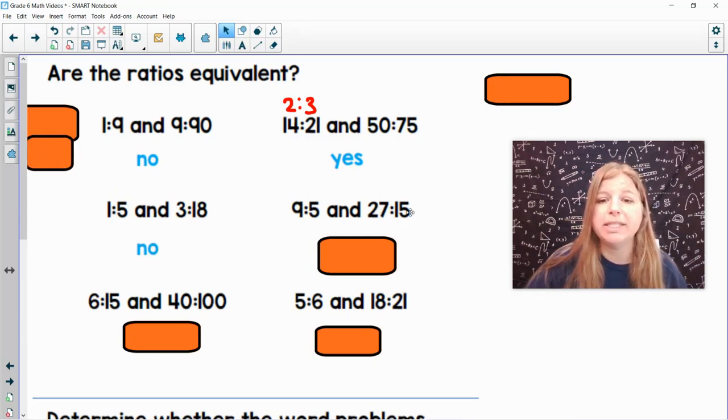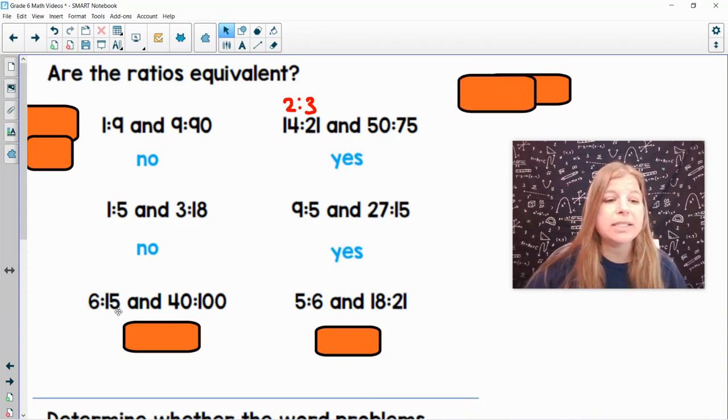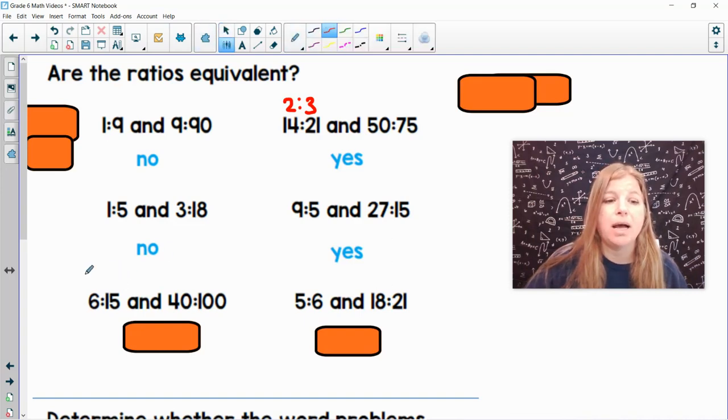9 to 5 and 27 to 15. If I divide 27 and 15 by 3, 27 divided by 3 is 9. 15 divided by 3 is 5. So those are totally equal. 6 to 15 and 40 to 100. If I divide 6 and 15 by 3, I would get 2 fifths.